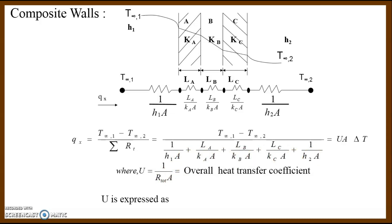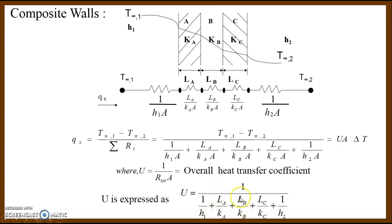Finally, the overall heat transfer coefficient U equals 1 divided by (1/h1 + L_A/K_A + L_B/K_B + L_C/K_C + 1/h2). This formula allows you to calculate the overall heat transfer coefficient for composite wall problems involving both conduction and convection.